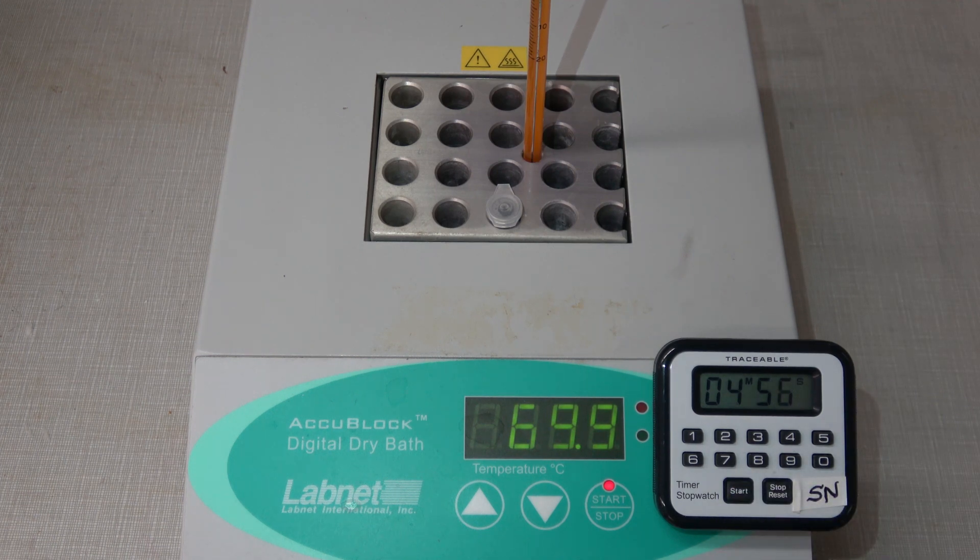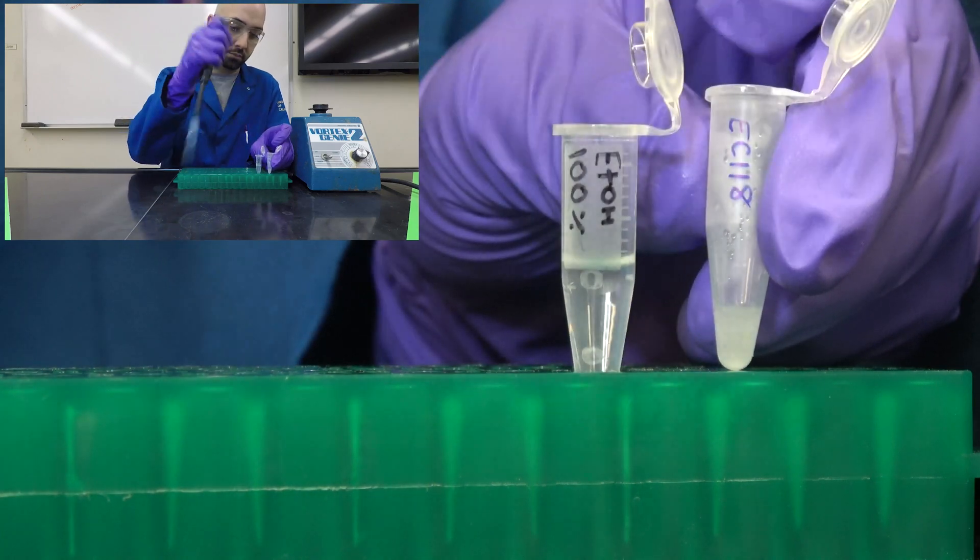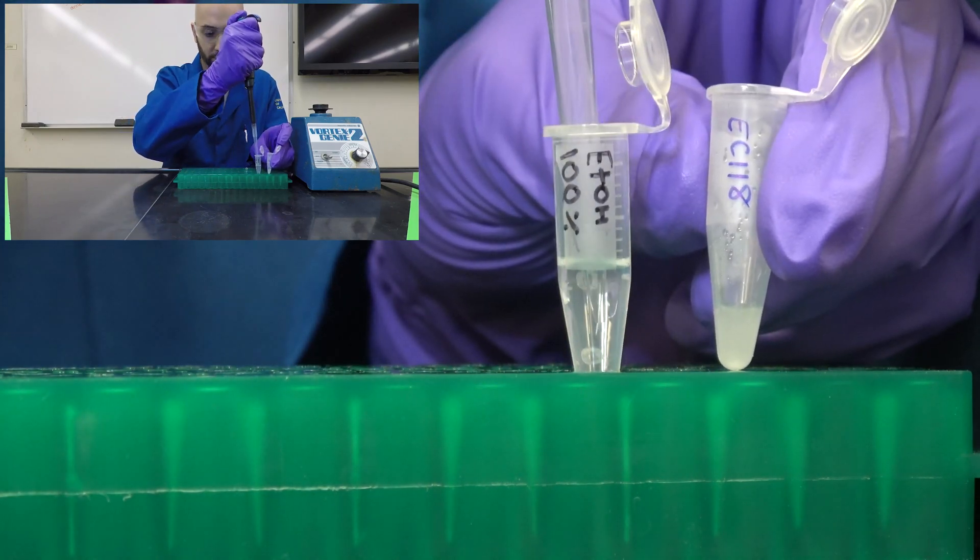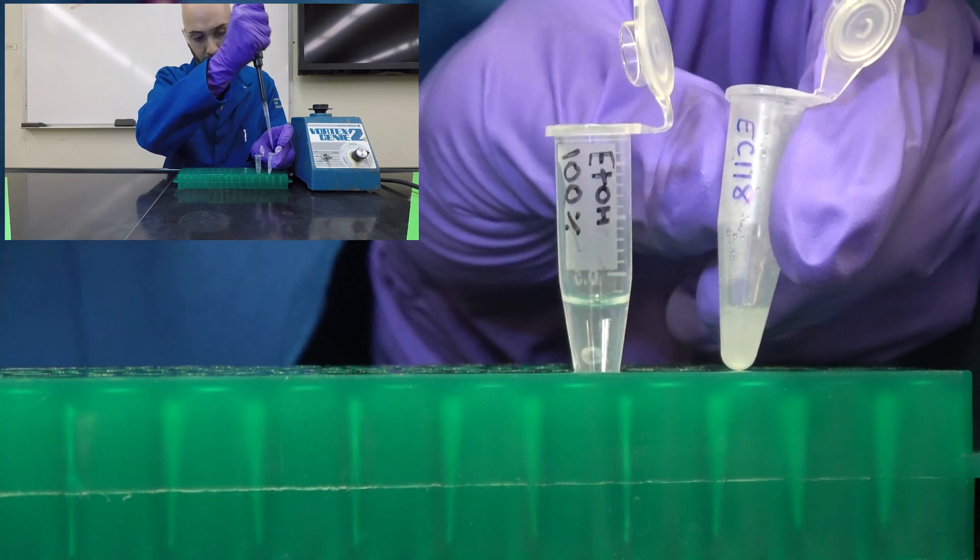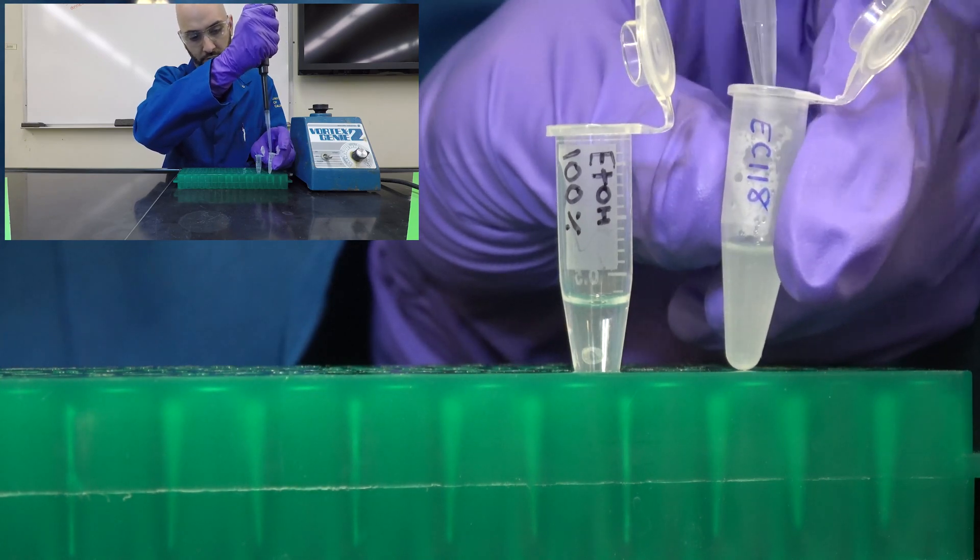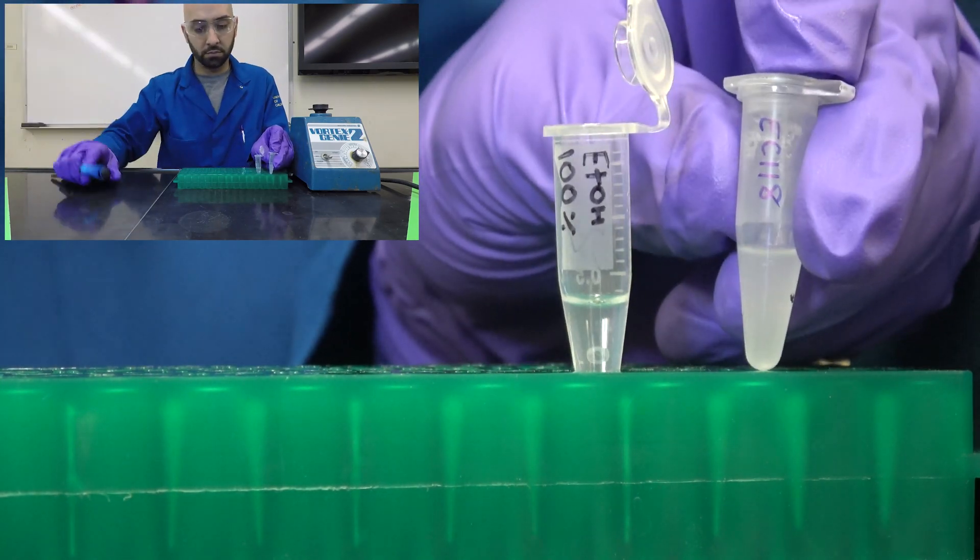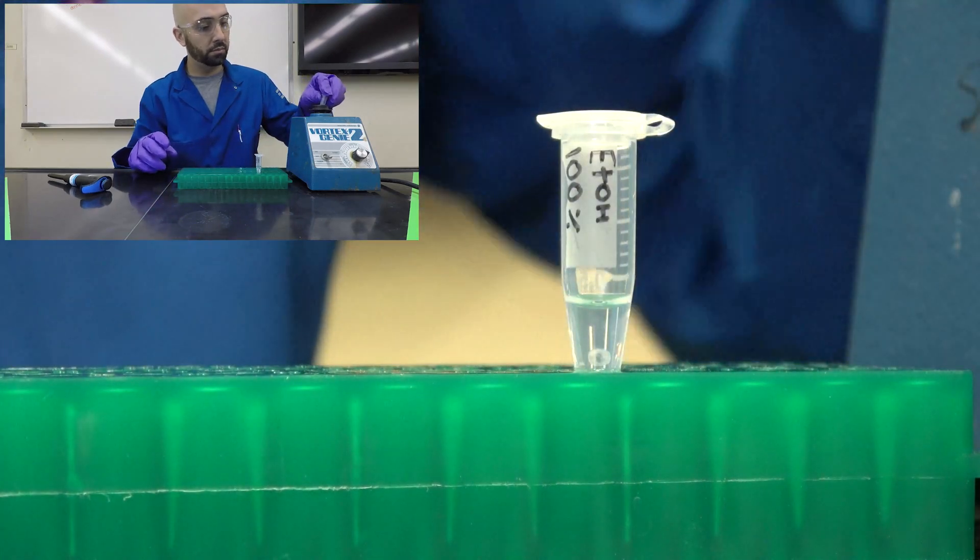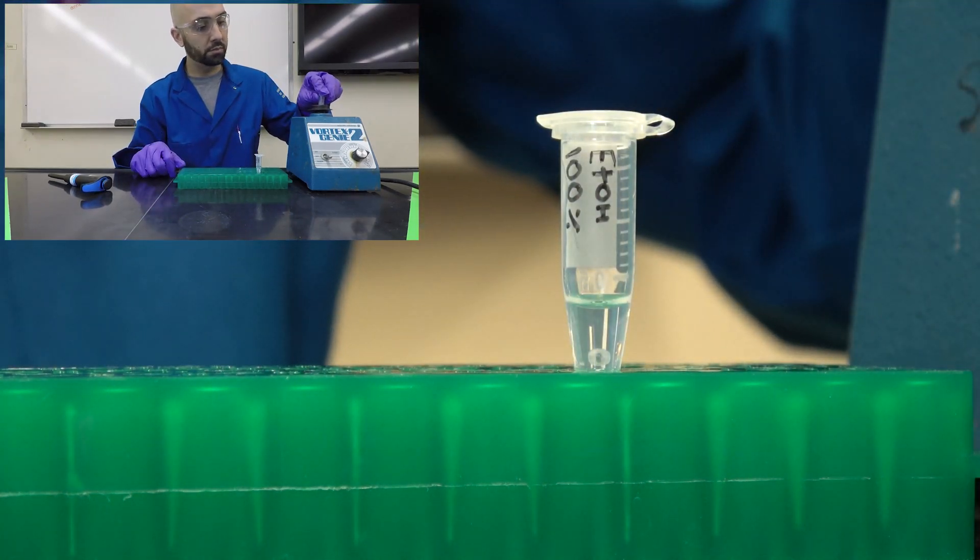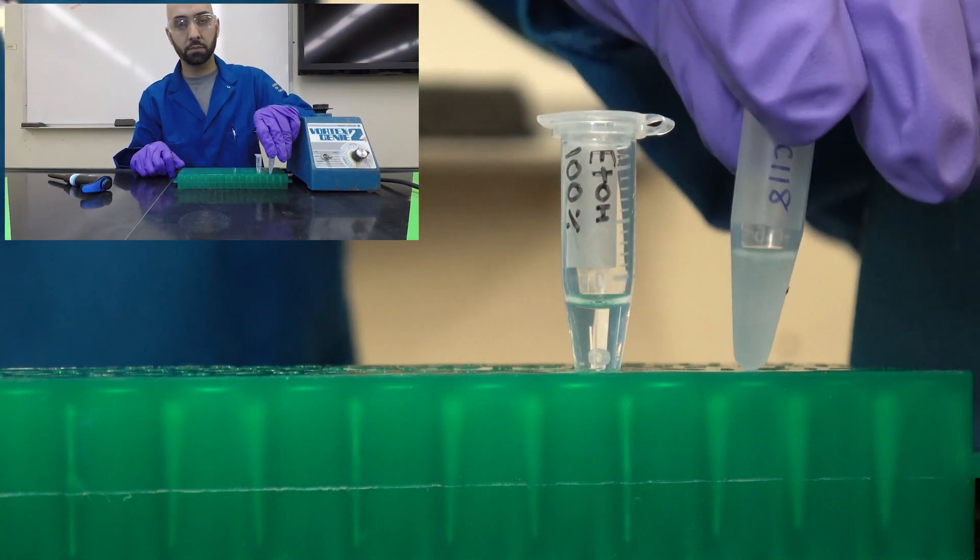Next we'll add 300 microliters of 100% ethanol. Ethanol alters the dielectric constant of the solution and prevents water from forming a hydration shell around the negatively charged phosphate backbone of genomic DNA. This will permit the precipitation of DNA by reducing solubility.